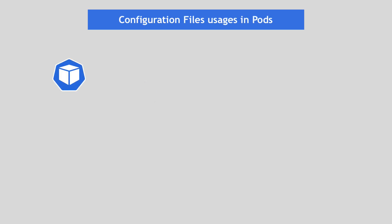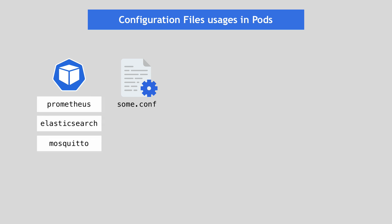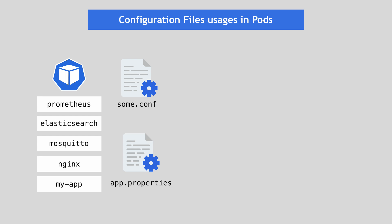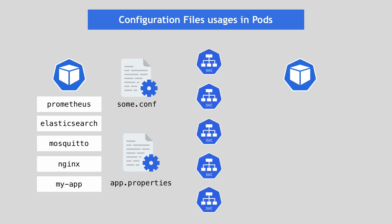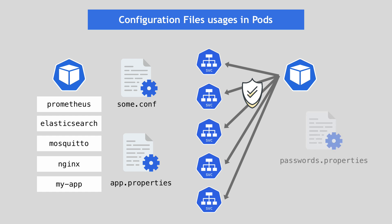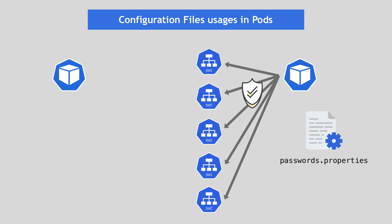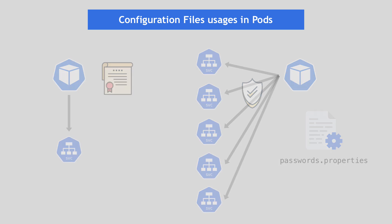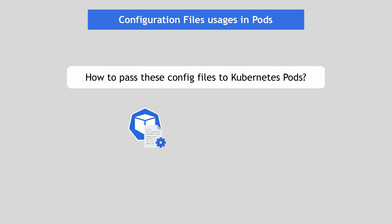Think of applications that take configuration files as a parameter when they start, like Prometheus, Elasticsearch, Mosquito Message Broker, Nginx, or your own JavaScript or Java application that has properties files — or applications that need a configuration file with sensitive data. Like if you have an application with 10 external services that it communicates with, which are all secured, so you have a password properties file with all these credentials, or maybe an application needs a client certificate file to communicate with an internal secured service. These are scenarios I have used very often when setting up Kubernetes clusters, because many services that you deploy in Kubernetes will have configuration files.